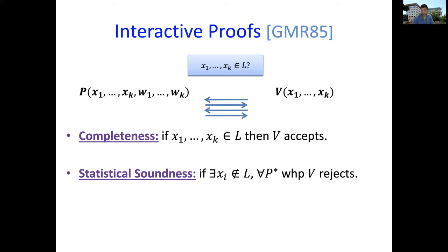It has statistical soundness. In terms of efficiency, we're looking for polynomial time verification, and we also want the honest prover, in contrast to a potential cheating prover, to run in polynomial time given these K NP witnesses. That's the setting we'll be considering for the first part of the talk.